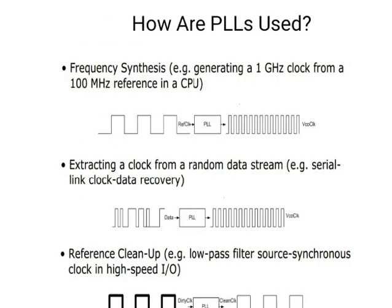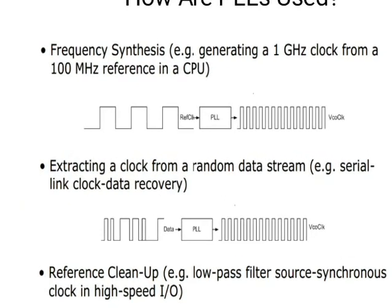How are PLLs used? For frequency synthesis, for example, generating a 1 GHz clock from a 100 MHz reference in a CPU — a diagram shows the reference clock given to the PLL to obtain the VCO clock. Second is extracting a clock from a random data stream, for example in serial link clock-data recovery — the random data stream is given to the PLL to get the VCO clock. The third is reference cleanup, for example a low-pass filter for source-synchronous clocks in high-speed I/O.